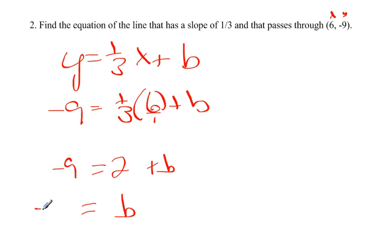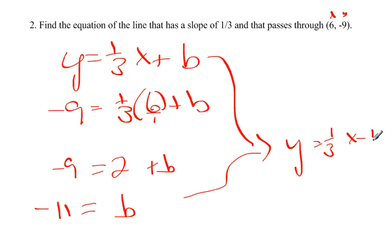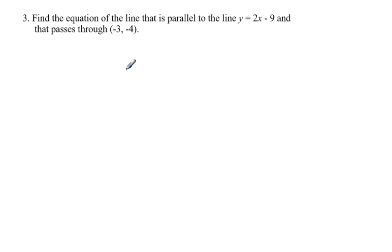Subtract 2 from both sides and you get negative 11. So our final equation is a combination of those two: one-third x minus 11 or plus negative 11. Two more.